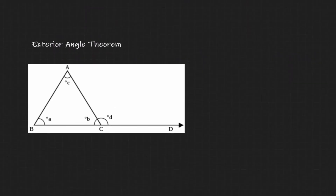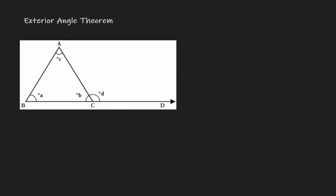Now let's discuss another idea: the exterior angle theorem. Here we have triangle ABC. Notice that there is an angle outside of this triangle — let's call it angle D. What this property says is that if I identify the two interior angles that are not next to the exterior angle — in this case angle C and angle A — then angle A plus angle C is always going to be equivalent to angle D.